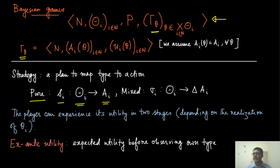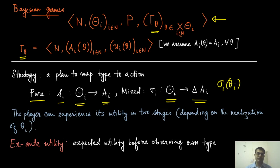Or it can be a mixed strategy, which means that from the type profile it is mapping to the simplex of A_i. So sigma_i of theta_i, in that case, will be a probability distribution over A_i.